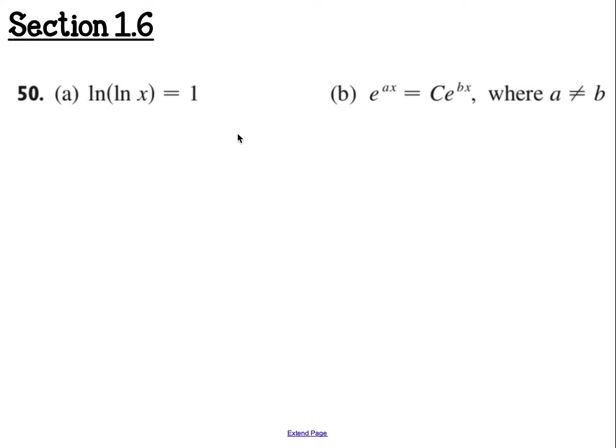The first thing I see is I have ln of ln of x. I want to get rid of both of them. The way I get rid of ln is base e. So I do e. These ln and this e cancel. So I have ln of x equals e to the first, or just e.